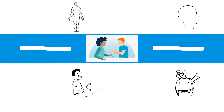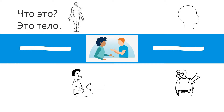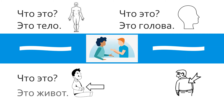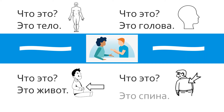A little more practice. Что это? What's this? If you said это тело — give yourself a pat on the back. This is a body, a person's body. On the right, we have an image of a person's head. Что это? Это голова. Bottom left, the arrow is pointing at the stomach — что это? Это живот. And then we've got an arrow pointing at a person's back. Что это? Это спина.